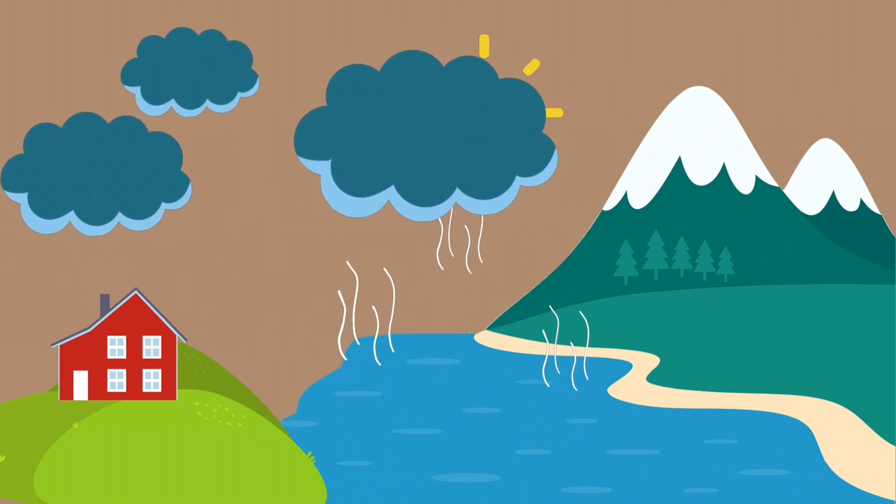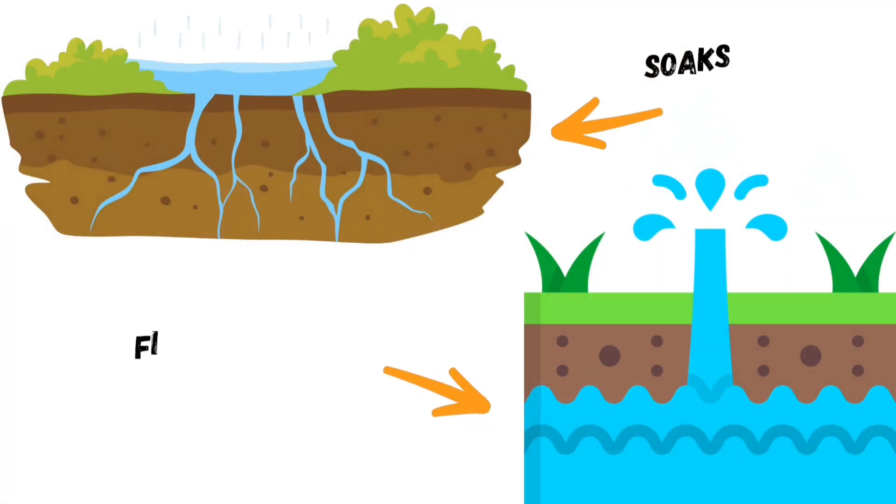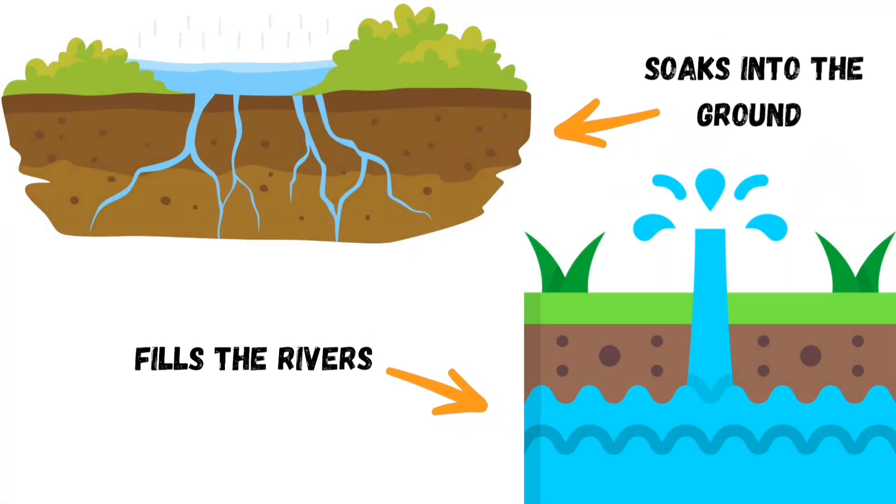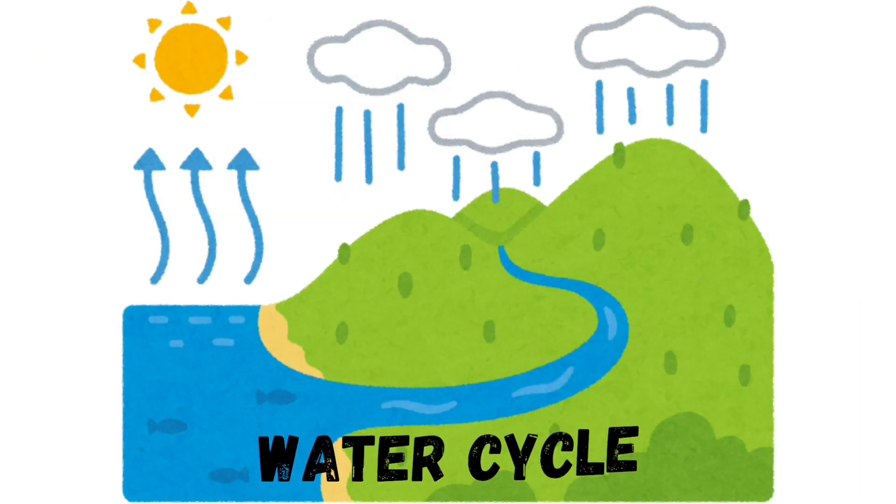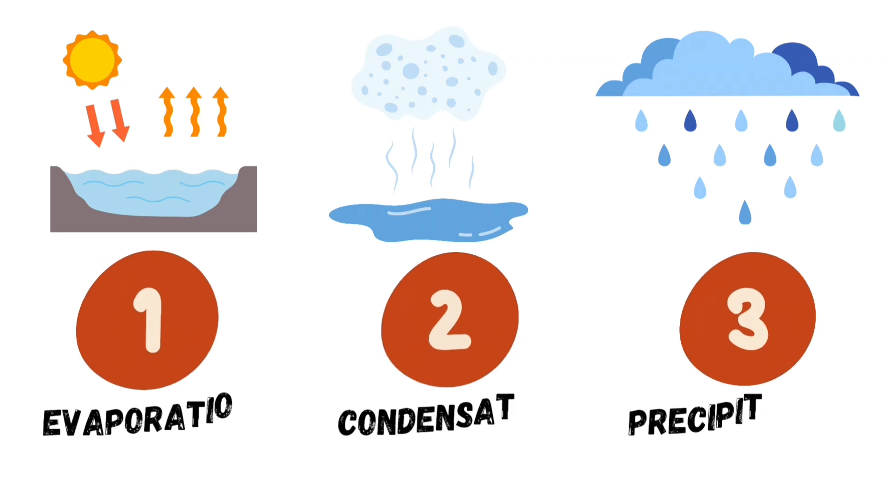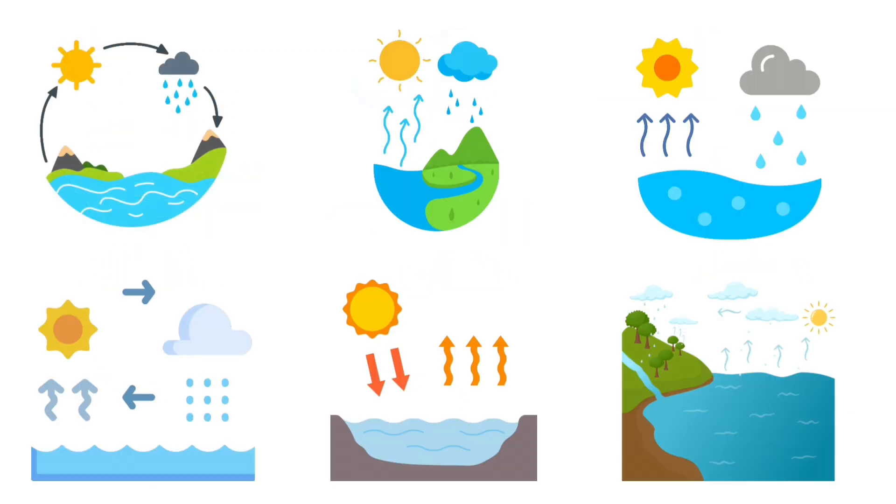After the rain falls, the water doesn't just disappear. It goes on an adventure. Some soaks into the ground. Some fills rivers and streams, and whoosh, it all flows back to the sea. And guess what? That's the end and the beginning. The water cycle starts all over again.